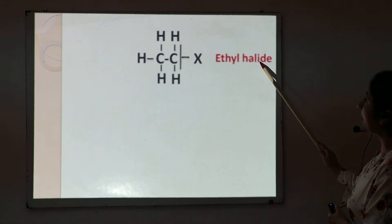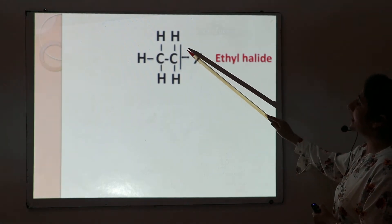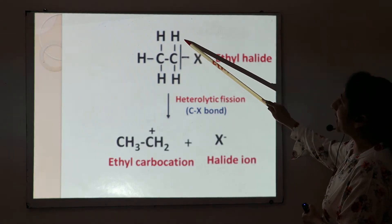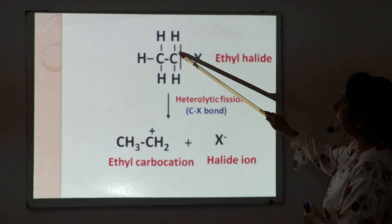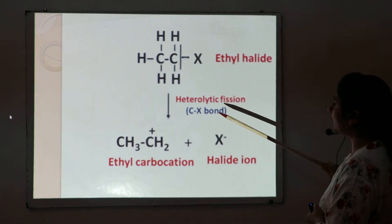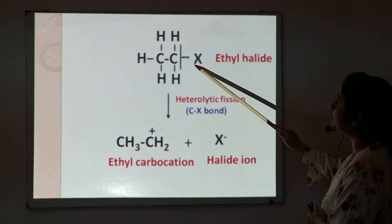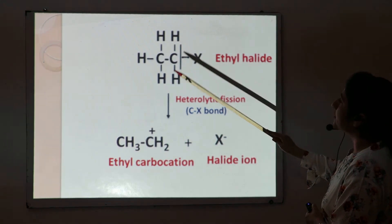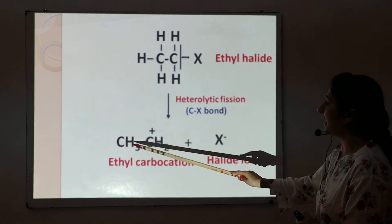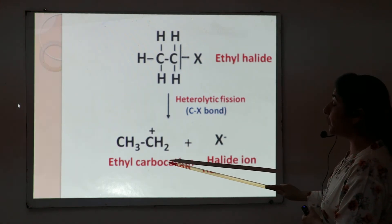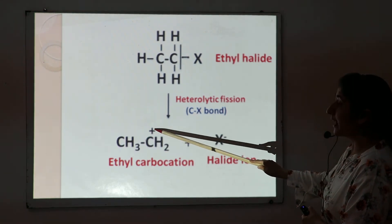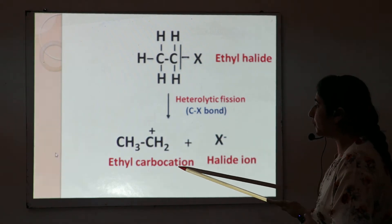Another example is ethyl halide. There is a heterolytic fission of the C–X covalent bond. Due to this heterolytic fission, this carbon acquires a positive charge because it loses one of its electrons, and the halide acquires a negative charge due to the presence of an excess electron. So from heterolytic fission of ethyl halide, we get two products: ethyl carbocation, because carbon acquires a positive charge, and the halide ion.